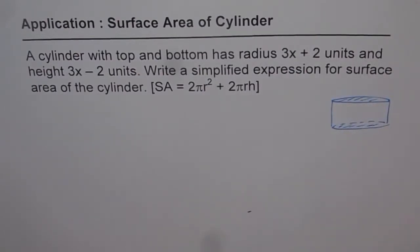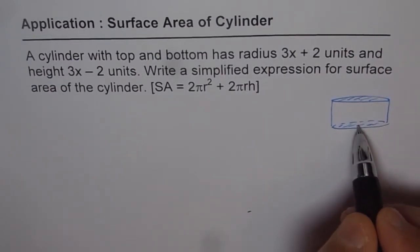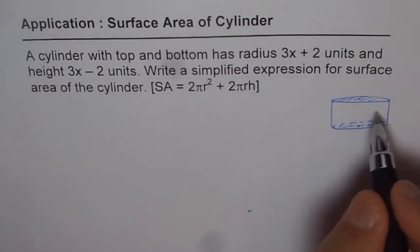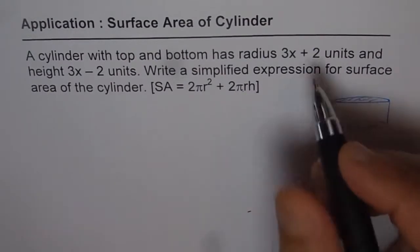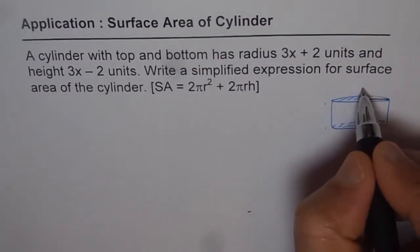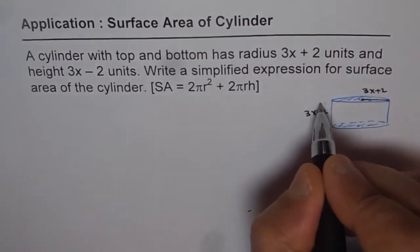So when we are taking surface area, surface area is 2 times pi r square which means there are two circles and the lateral area which is 2 pi r times h, the height. Now we are given here that the radius is 3x plus 2 and the height given to us is 3x minus 2.